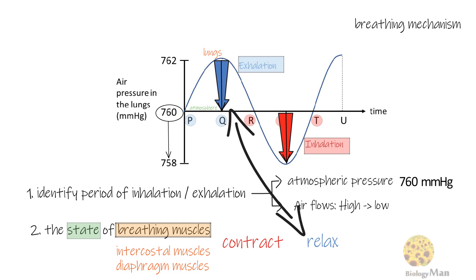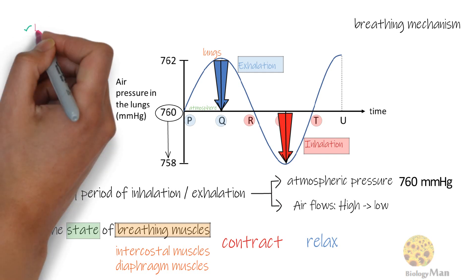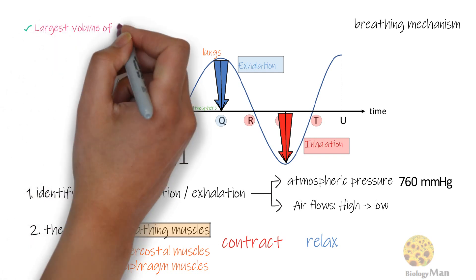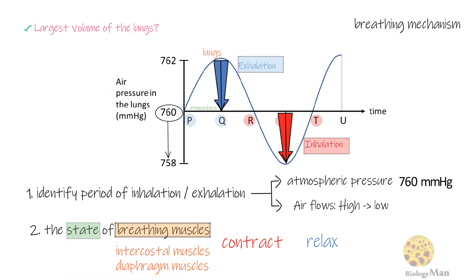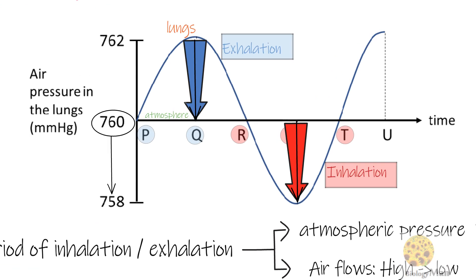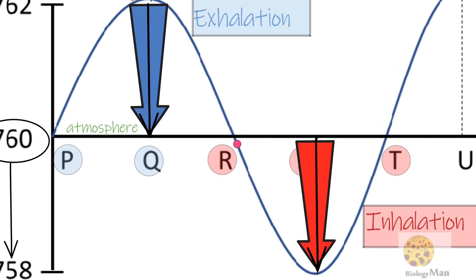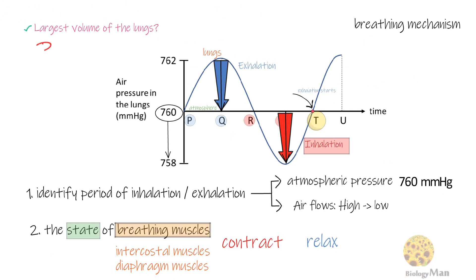There are two variations of these question types in the past DRC exam. First, the question may ask about the moment which the lungs have the largest volume. To better understand this scenario, you need to take a deep breath now. You may notice that the lungs reaches its largest volume towards the end of inhalation and the moment before exhalation starts. And in the graph, T should be that moment. After T, exhalation starts.